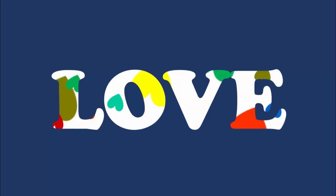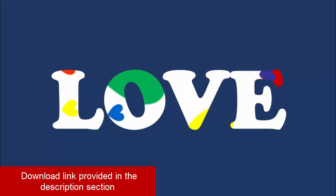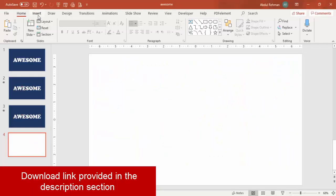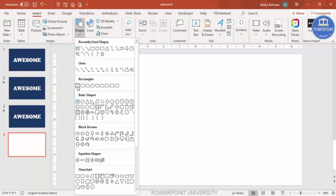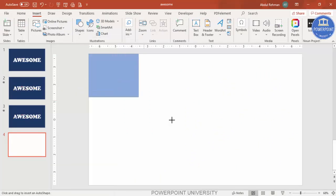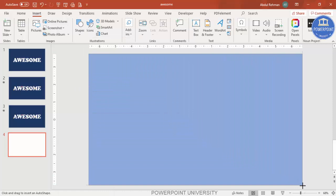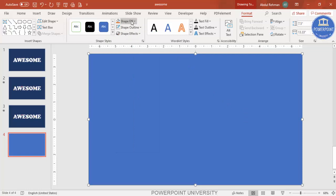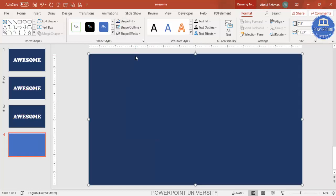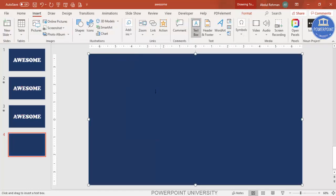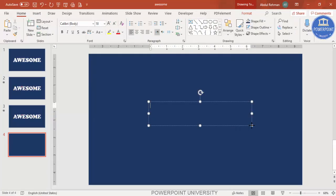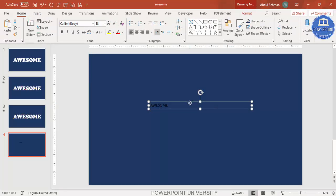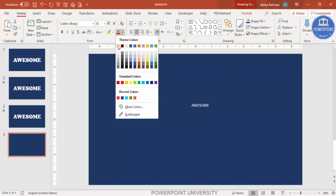Let's see how to do this in PowerPoint. Add a new slide, go to Insert > Shapes, select the first rectangle, and cover the whole slide. Set shape outline to no outline and give it any color of your choice. Then go to Insert > Text Box and type a random text — I'm going to type 'Awesome'. Center it and make the font color white.